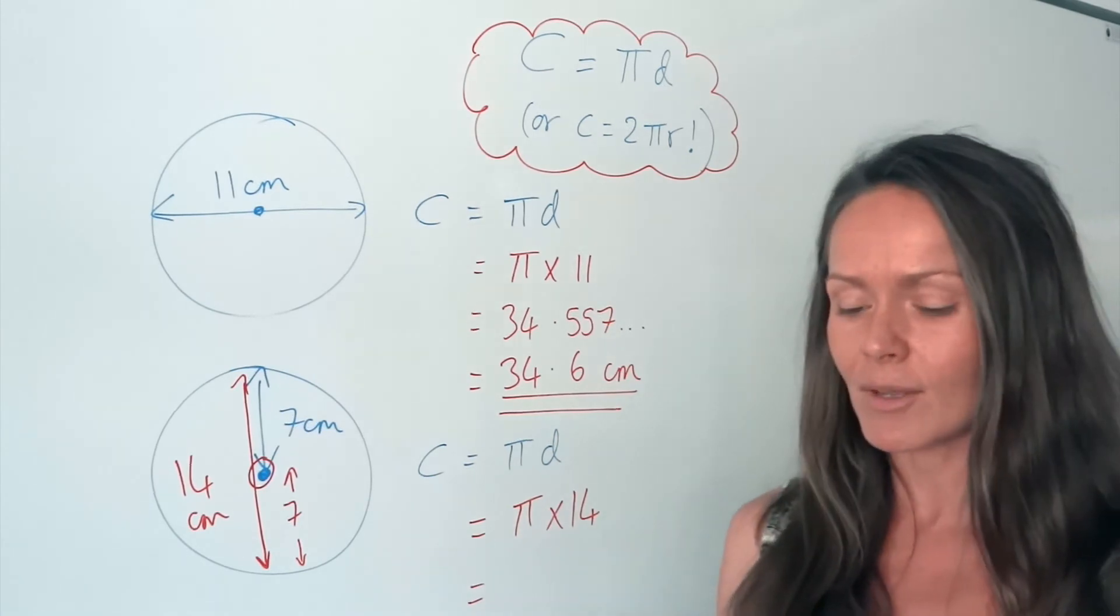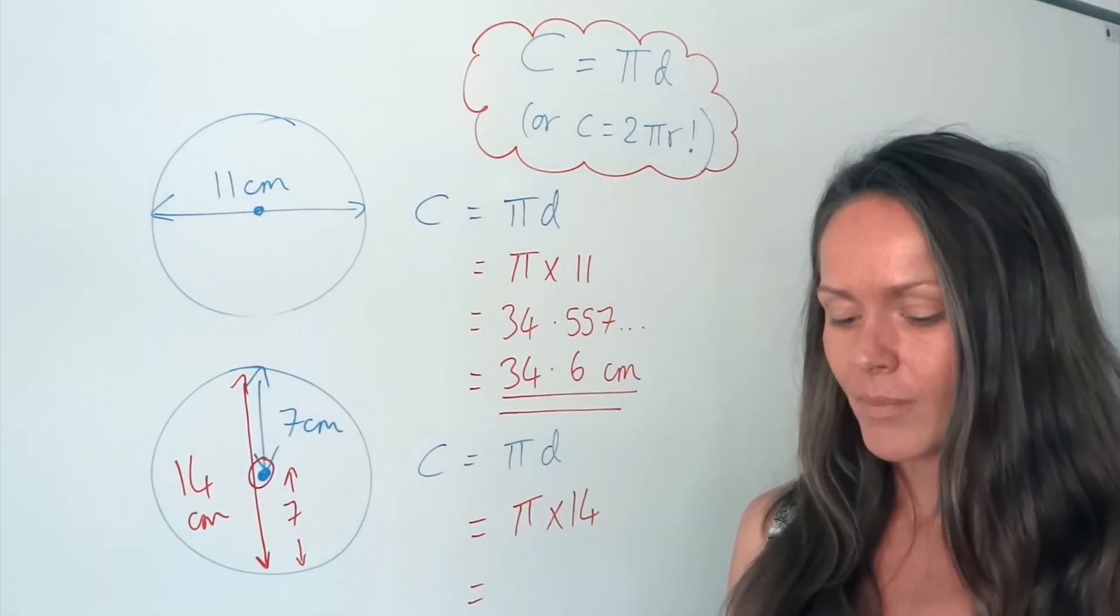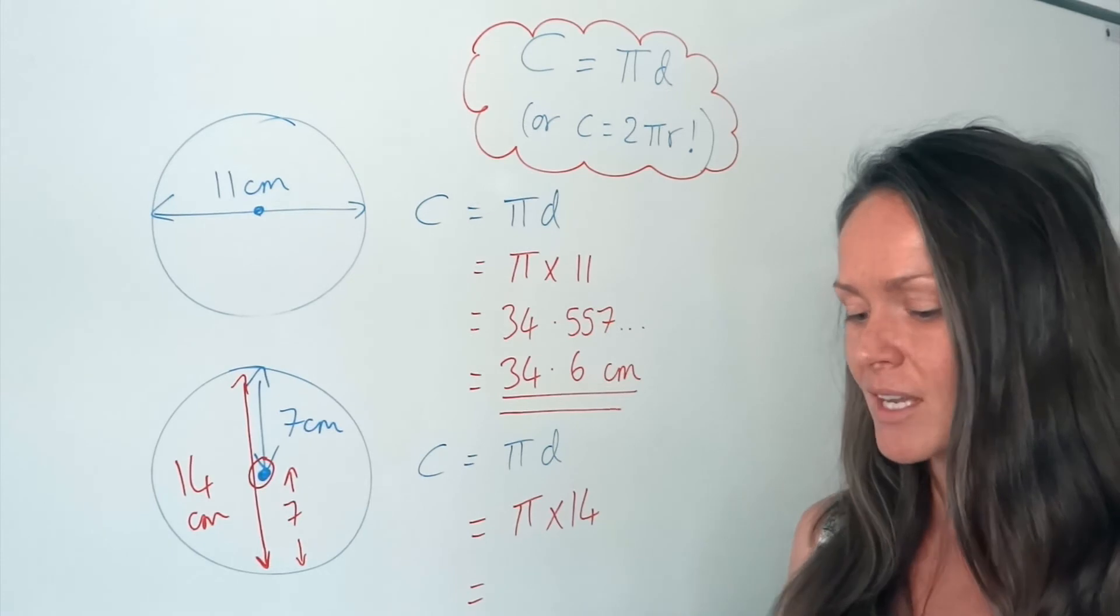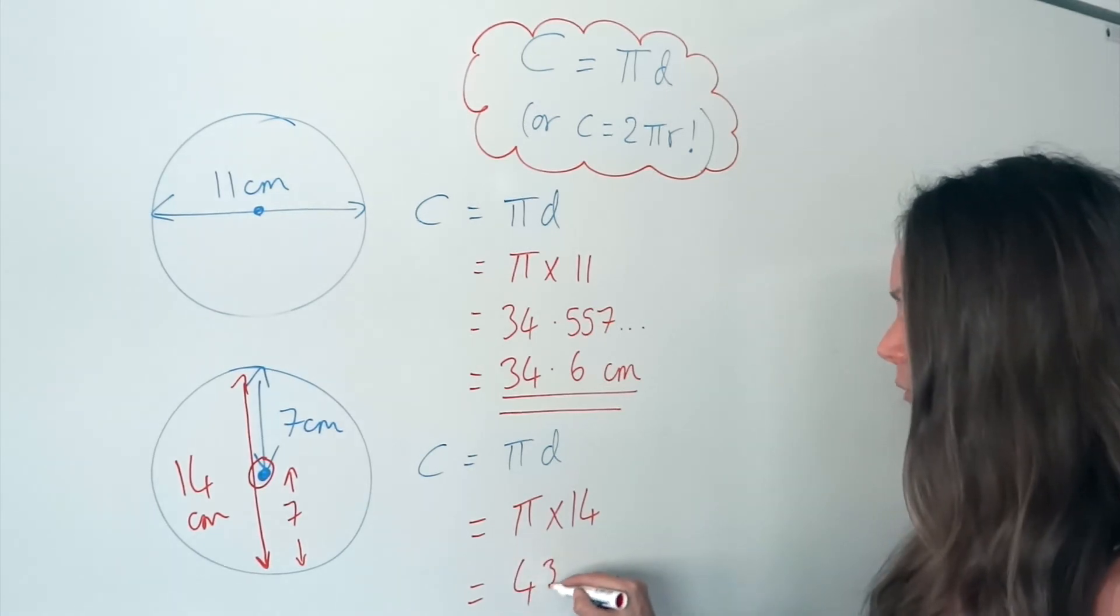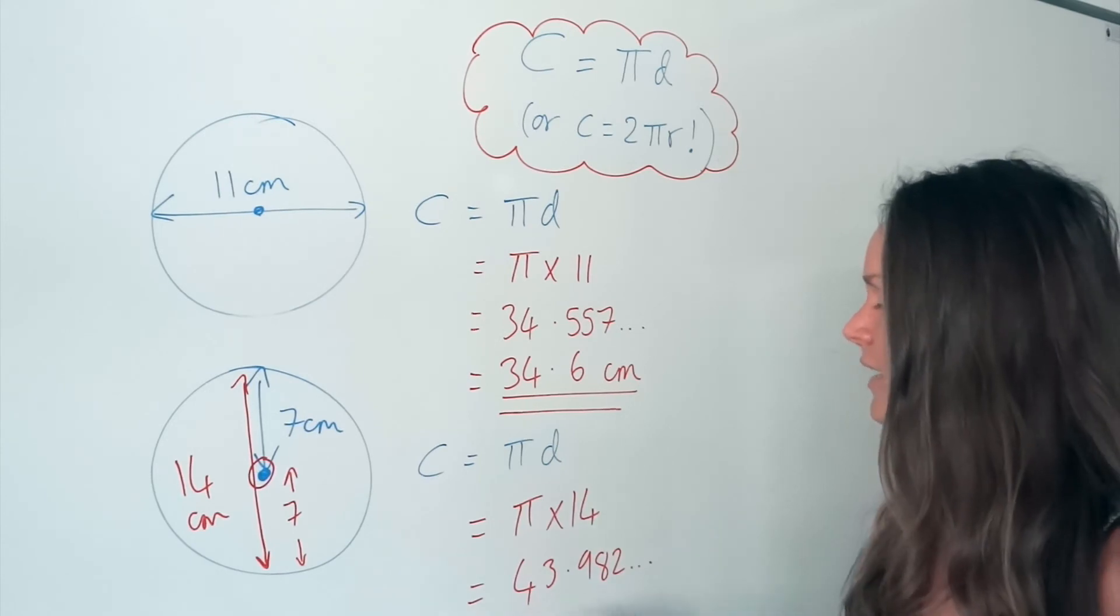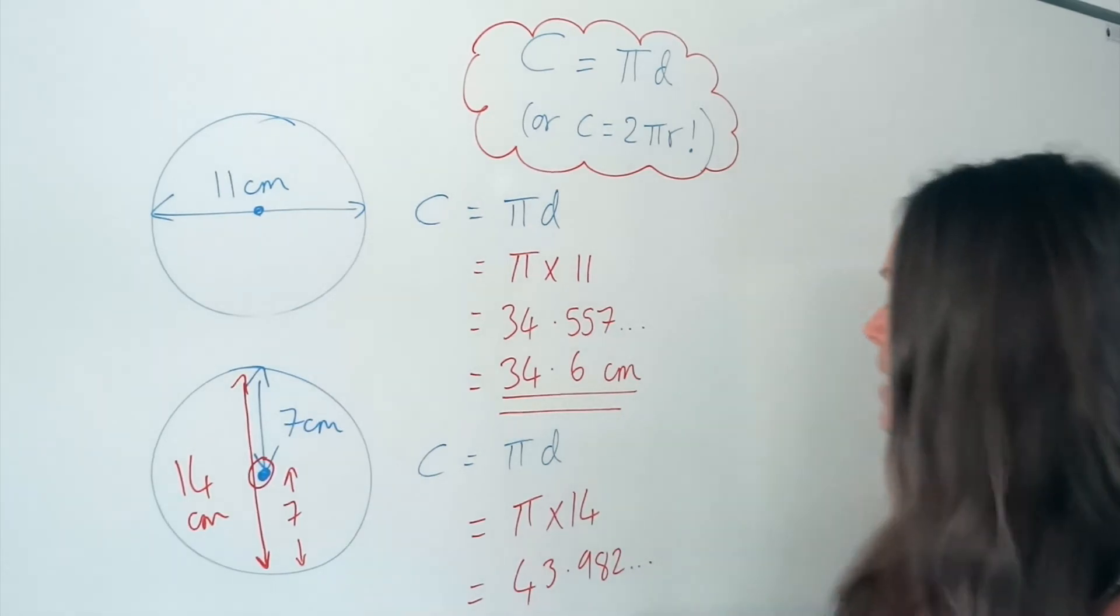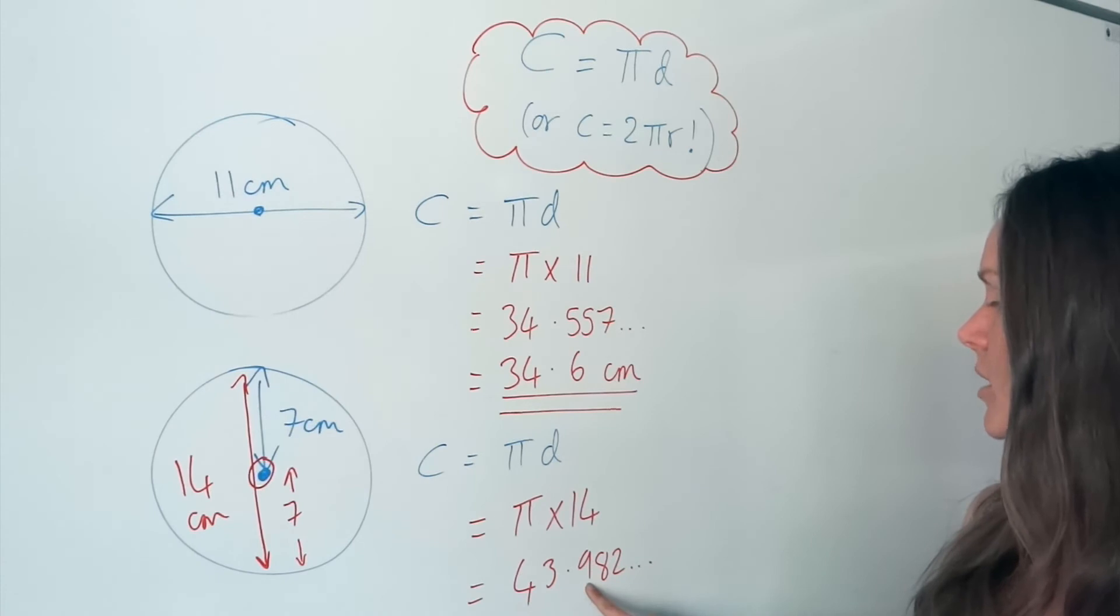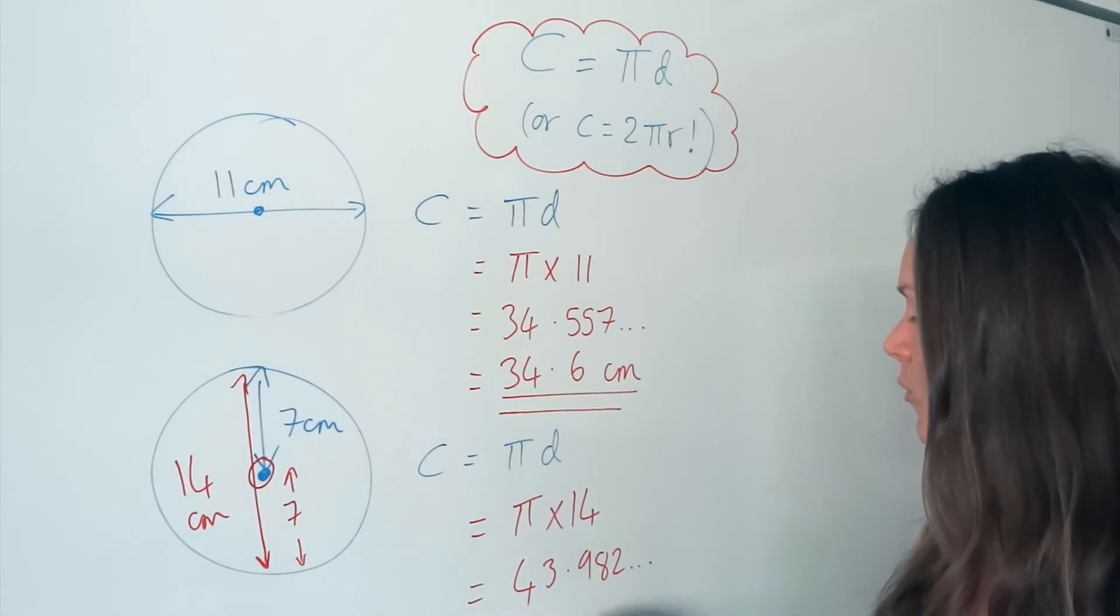So again, use your calculator. Find pi, multiply pi by 14. This time, I've got 43.982... And again, I'm going to round to one decimal place. So the 8 rounds this 9 up to 10, which changes that one to a 4. So it's 44.0.